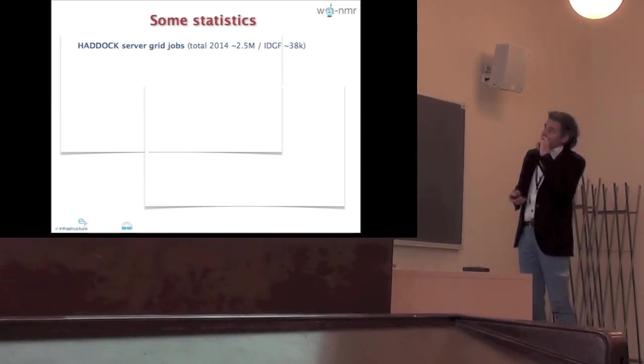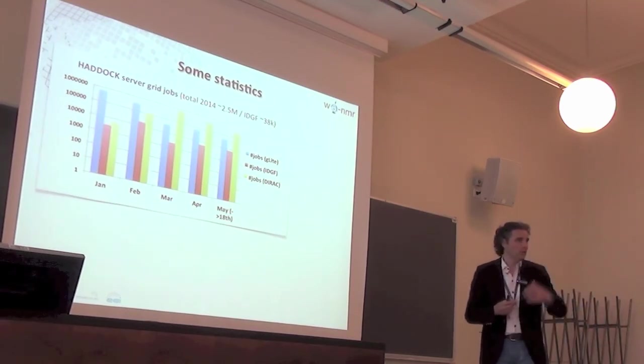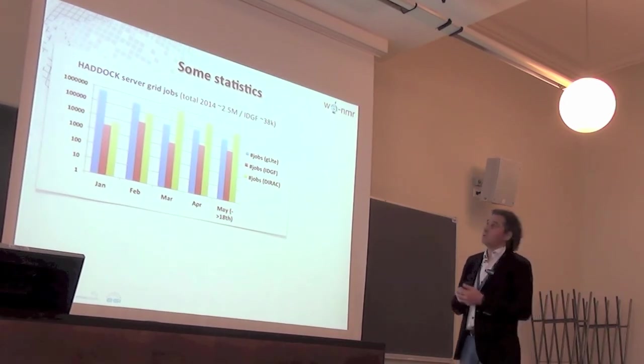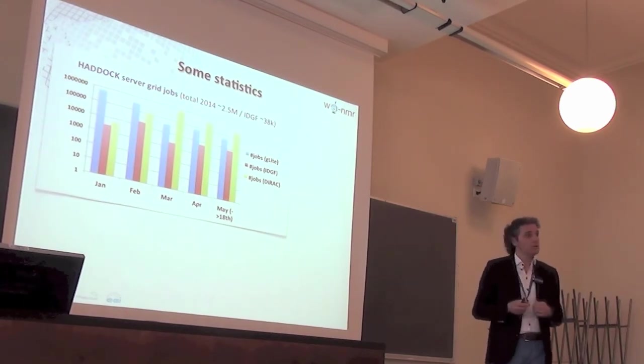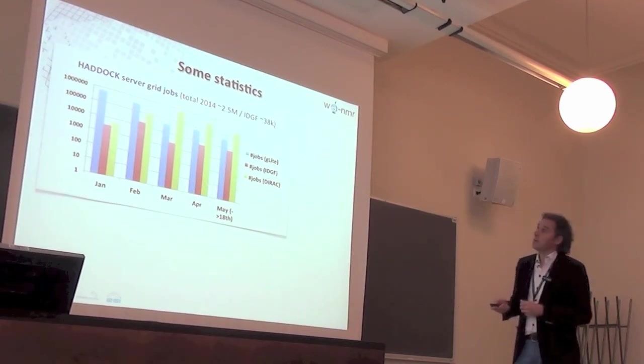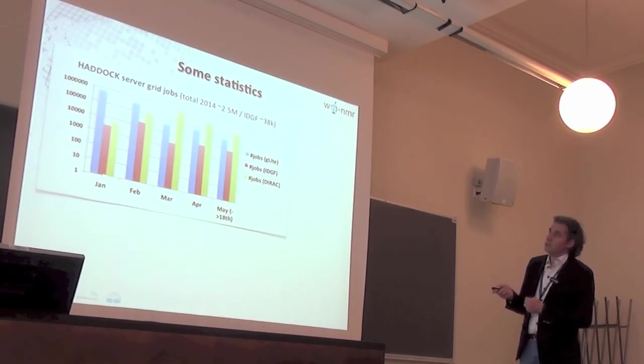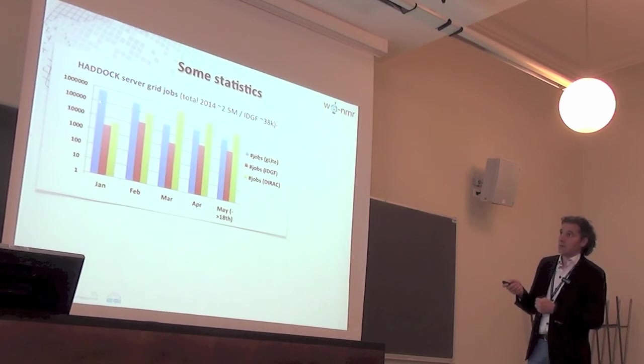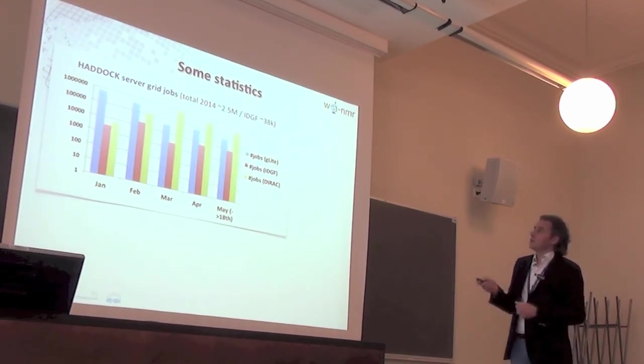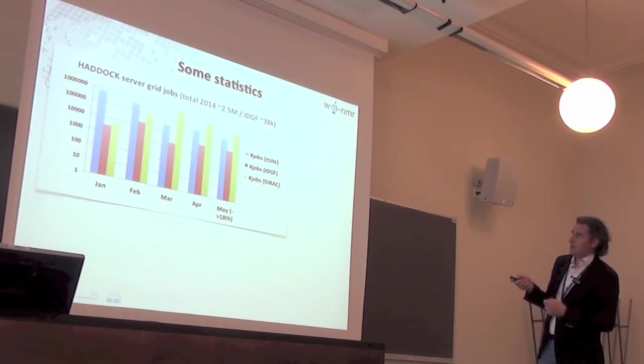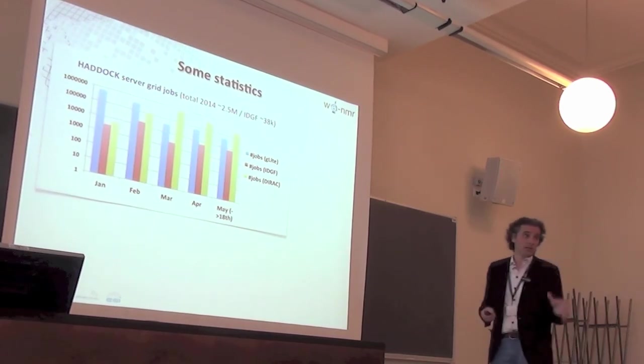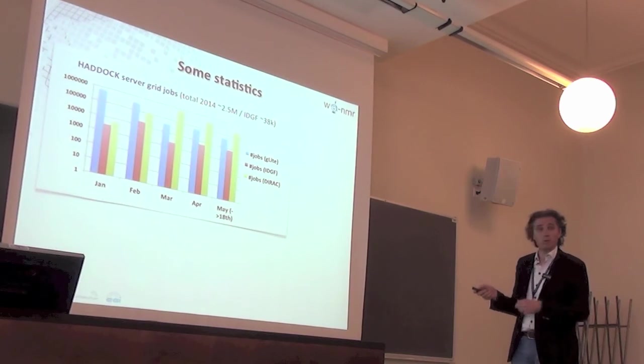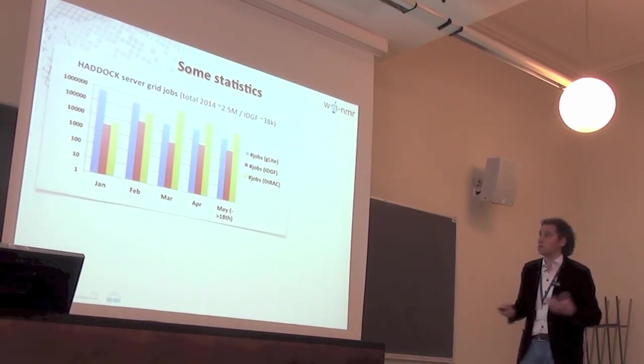Some statistics. This is from this year, because we started basically early this year to implement things on desktop grid resources. We first had to validate our software to make it run. The software runs in a Linux virtual machine, a mini system, because we need the Linux environment. These are the months - this is now May 18th. This is the number of jobs saved by the Hadock server. This is a log scale, so 1 million up there. You see in blue the number of jobs sent through G-Lite - we are a bit short of 100,000. Jobs sent to IDGF resources - we started basically in January. Now we're also using Dirac as a mechanism to send jobs, which is very efficient. In the future, Dirac will also send jobs to desktop grid resources, so then it's all integrated.